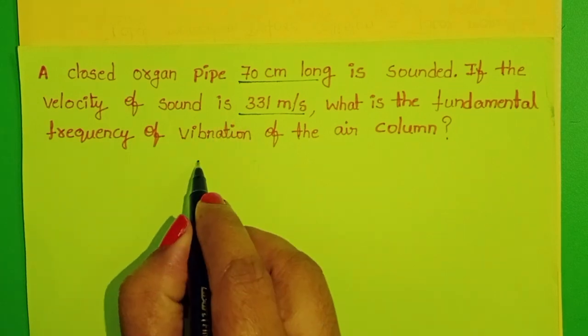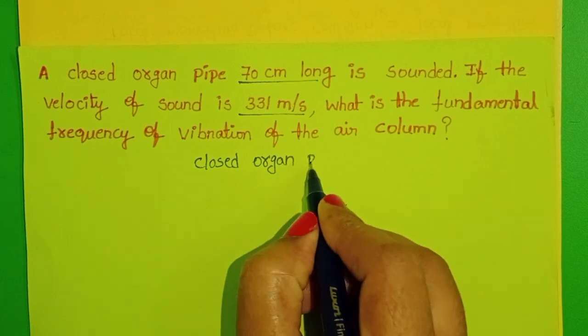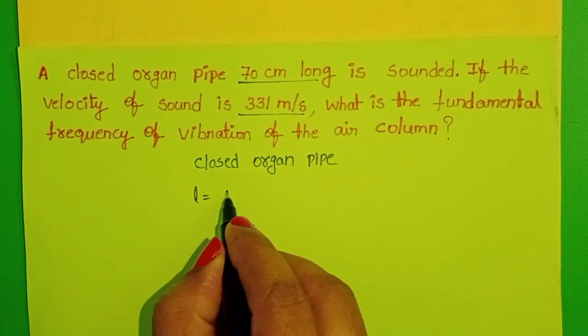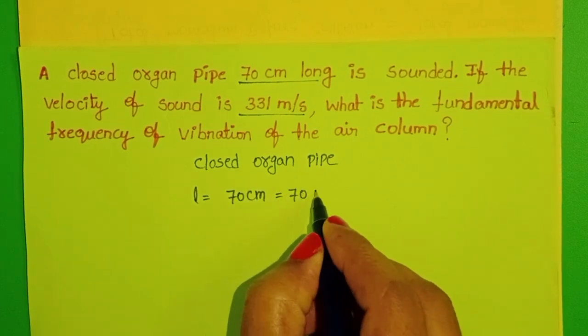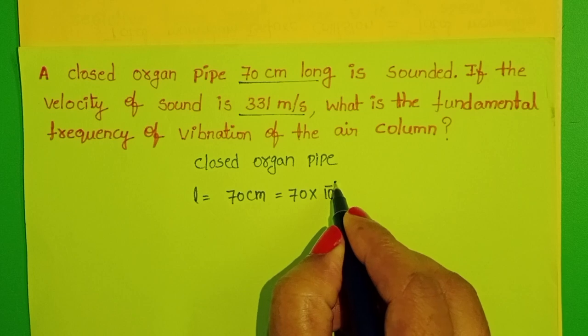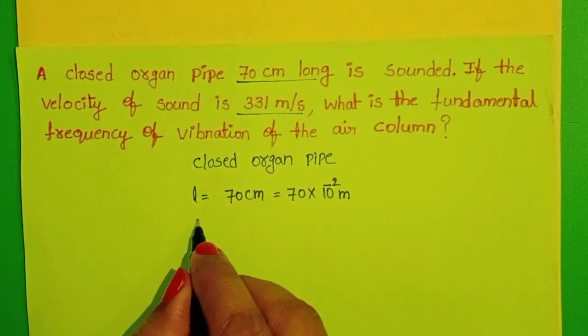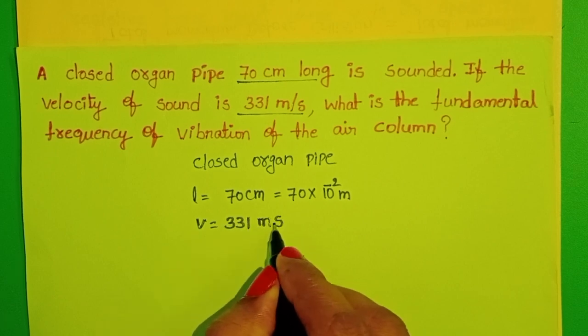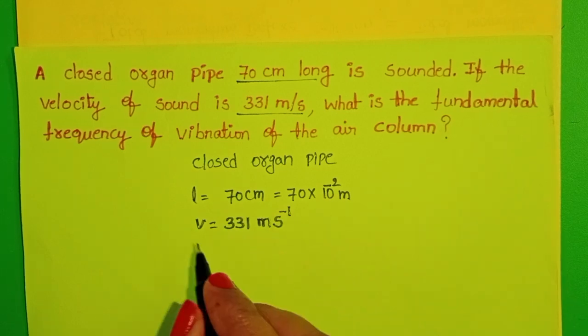Given: pipe is closed organ pipe. Length of the closed organ pipe is 70 cm. Convert into meters: 70 into 10 power minus 2 meters. Velocity of the sound: 331 m per second. We have to find out the fundamental frequency.